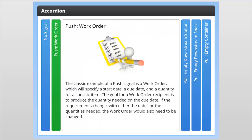Push with a work order. The classic example of a push signal is a work order, which will specify a start date, a due date, and a quantity for a specific item. The goal for a work order recipient is to produce the quantity needed on the due date. If the requirements change with either the dates or the quantities needed, the work order would also need to be changed.